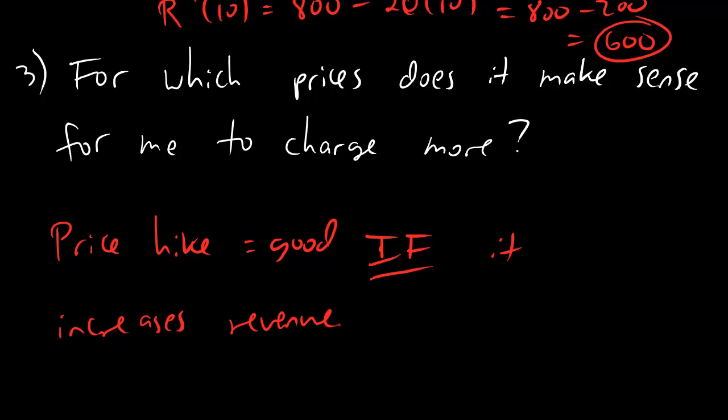That probably makes sense. And now let's even look at what we wrote down. What we wrote down is that we want to increase revenue. Revenue is the function that we wrote down up here, 800p minus 10p squared.